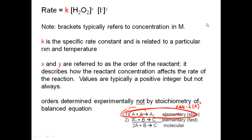This is why when you calculate your rate laws, you may not find a species in your actual overall rate equation. In this example, B wouldn't appear — it would be zero order, because it has no effect on rate. What's affecting the rate is that slowest step, which is A colliding with A.